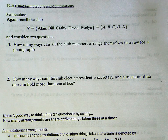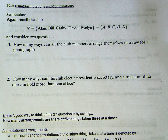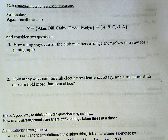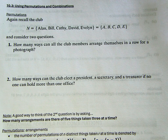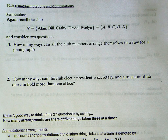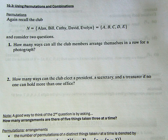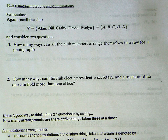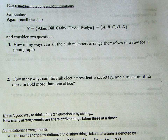We're going to be looking at how we take different subgroups of a main group. We're going to deal with Club N, which we use quite a bit. Club N has Alan, Bill, Kathy, David, and Evelyn — or A, B, C, D, E — and we're going to consider two different questions using permutations.